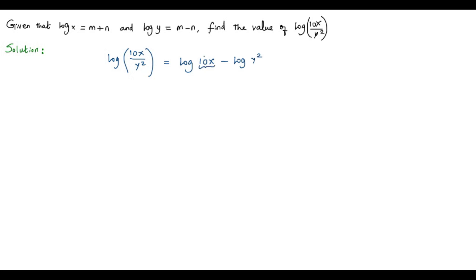Here 10 and x are multiplied. Now we can use the first fundamental law of logarithm. In the argument, if two values are multiplied, we can take logarithm separately for each value and add them. So we get log 10 plus log x. And here we can use the third fundamental law to get the exponent in front of the logarithm, so minus 2 log y.